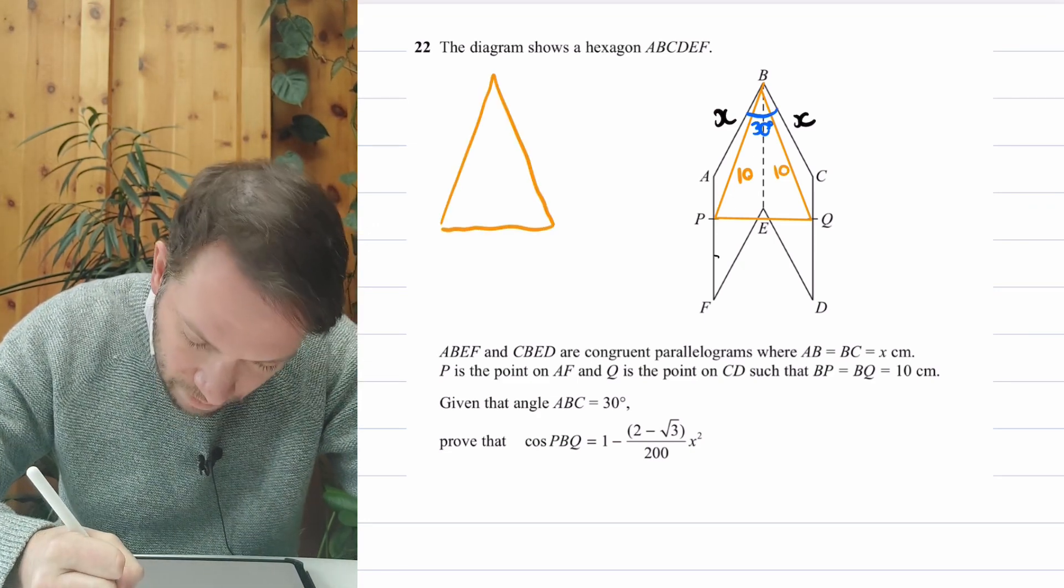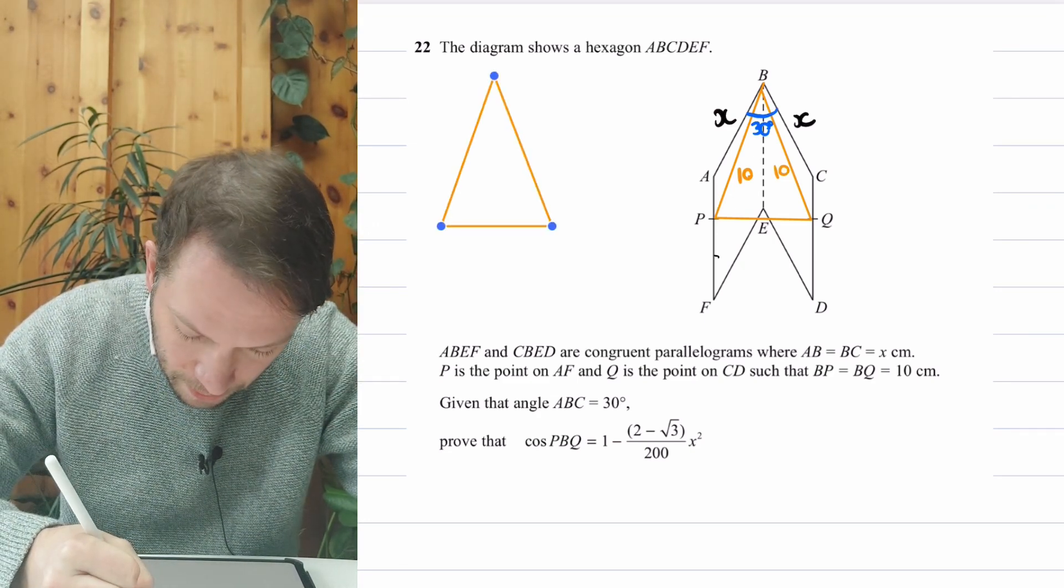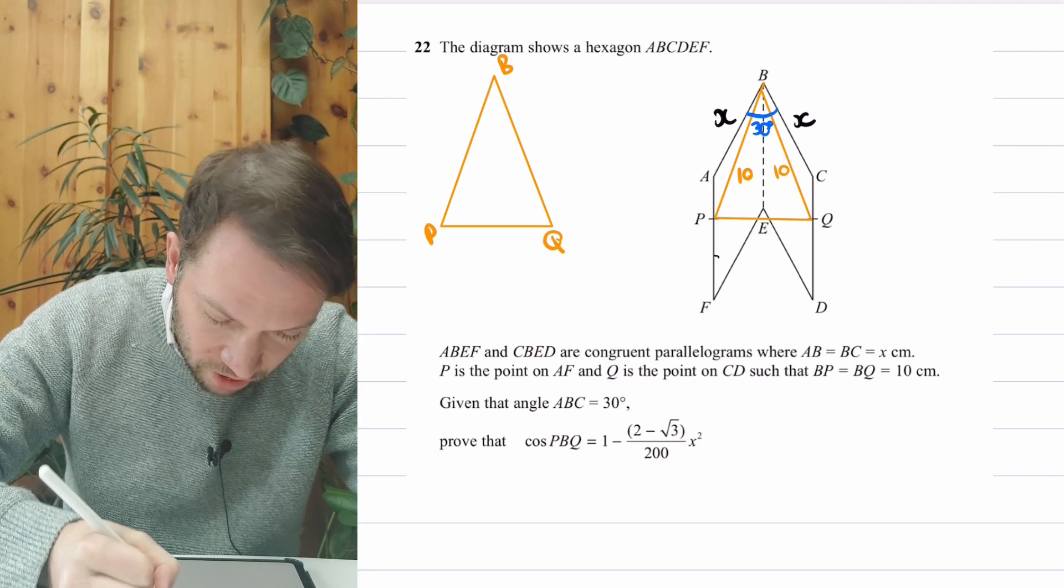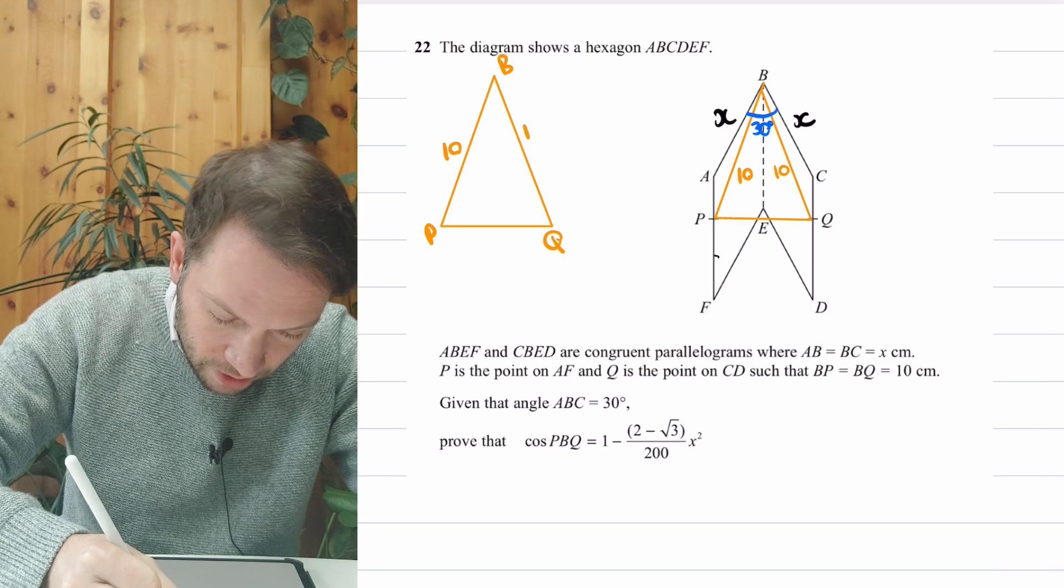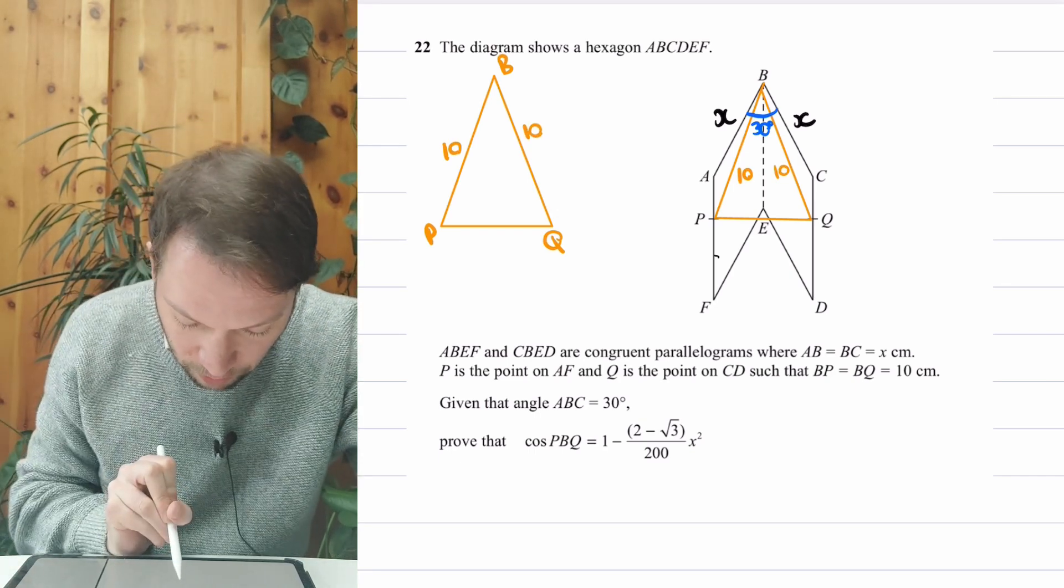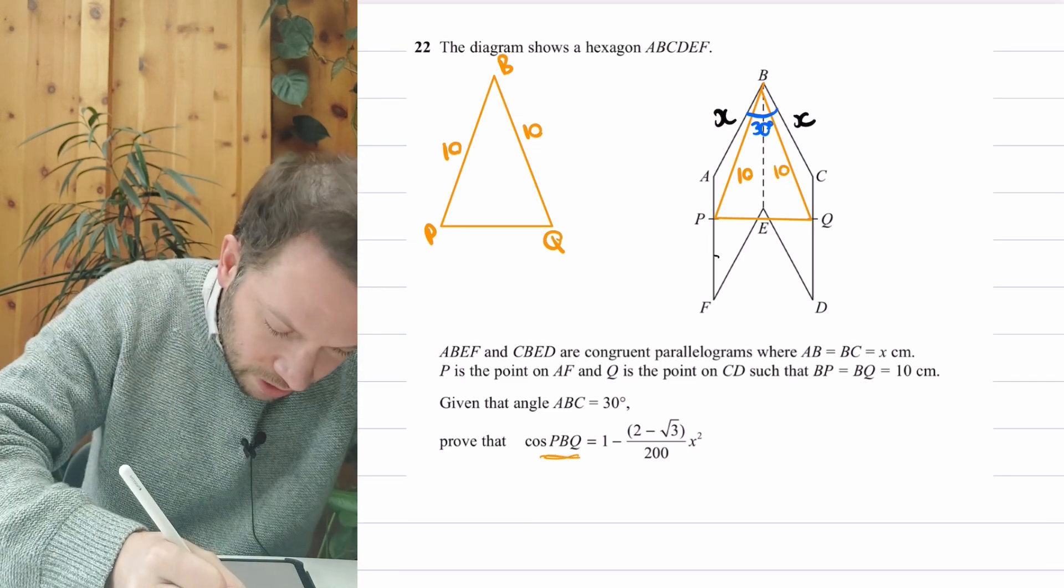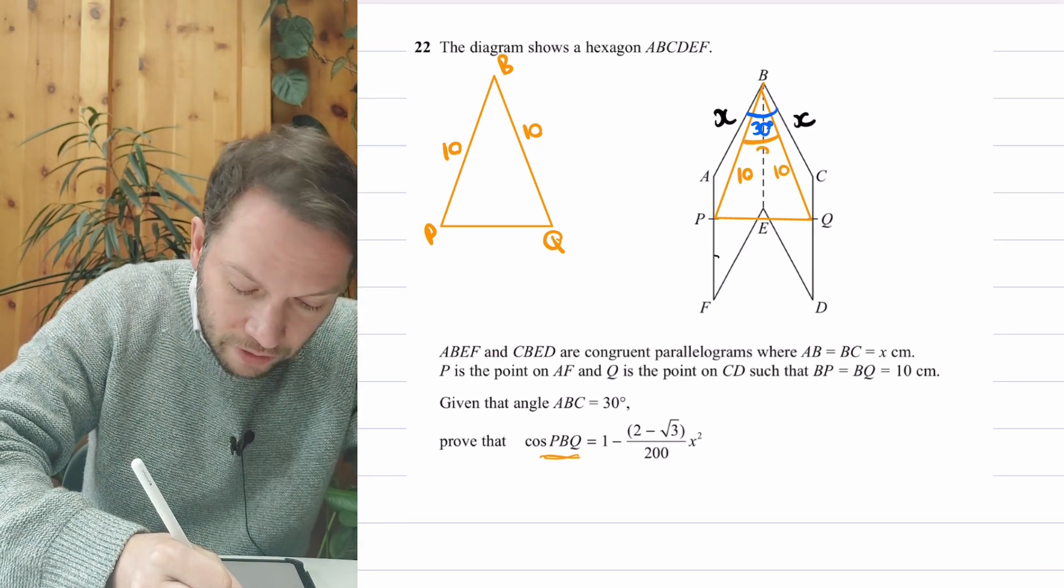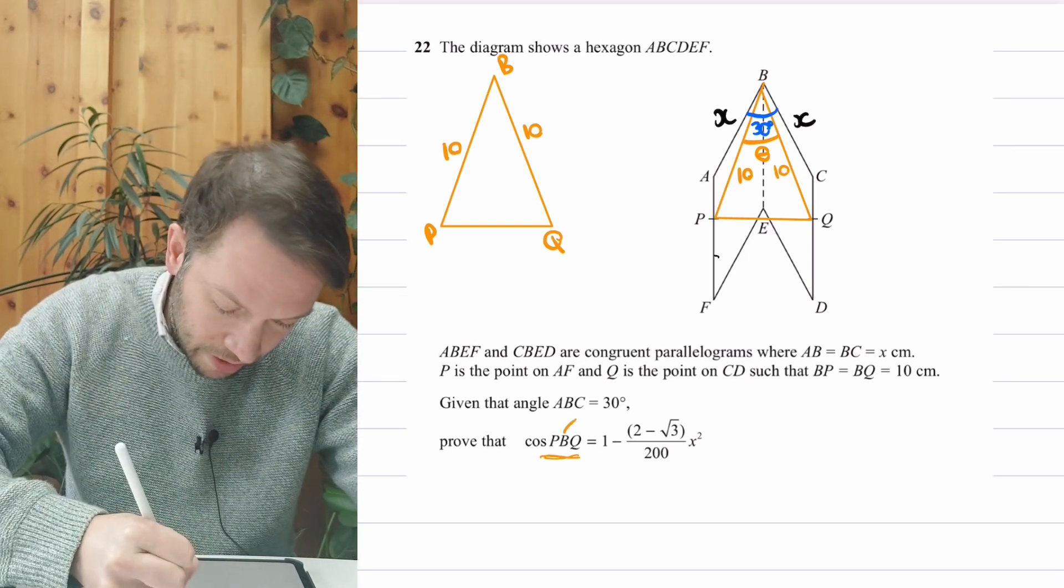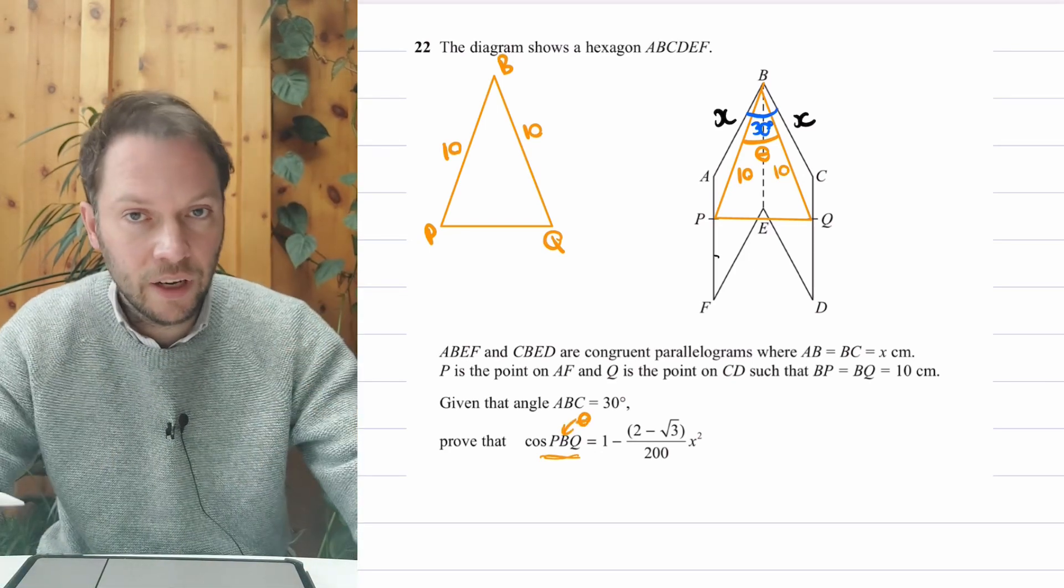So PBQ. And let's put the information on there. We've got the 10, we've got the 10. We don't know the length of the bottom. And actually, we've got this angle here, PBQ. We're trying to find this angle here. Now, just for convenience, we're going to call it theta, just so I don't have to write out PBQ all the time. But that is just theta. So we're trying to find cos of theta.